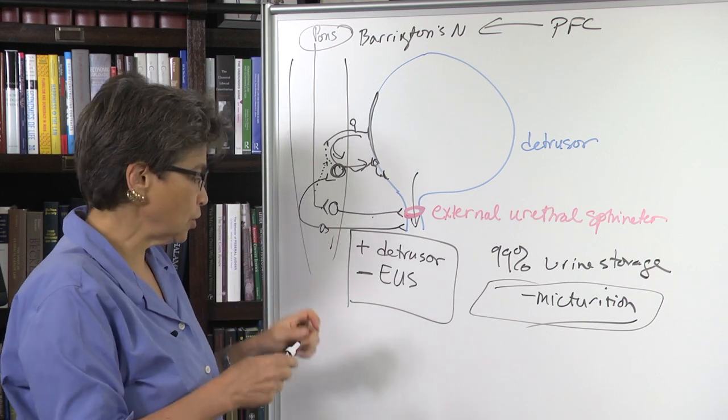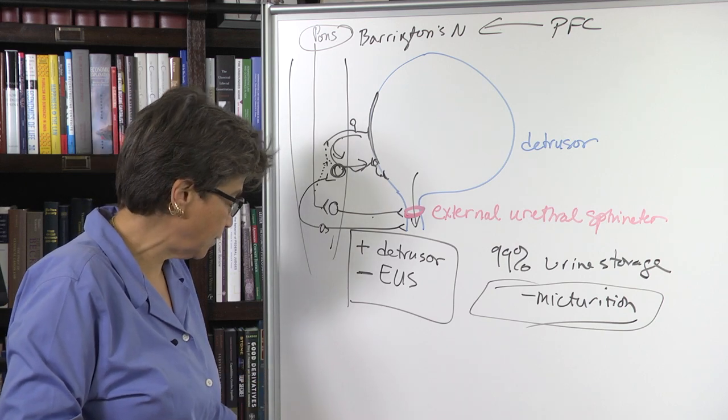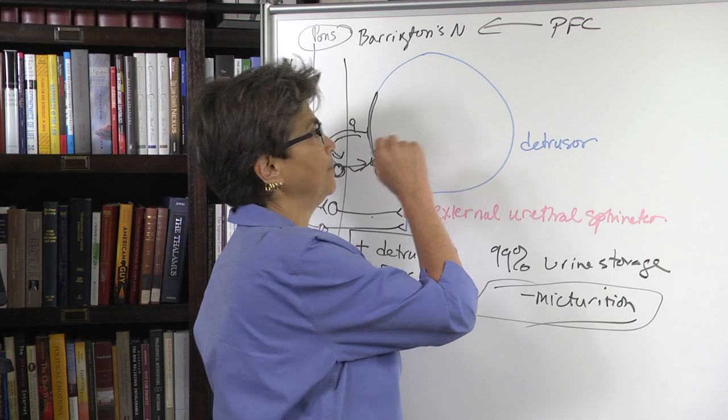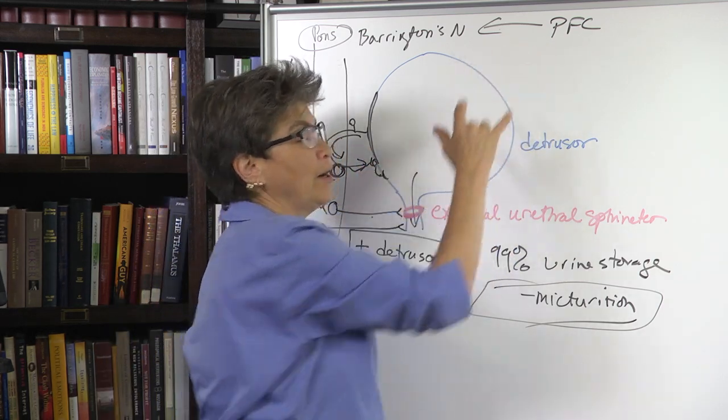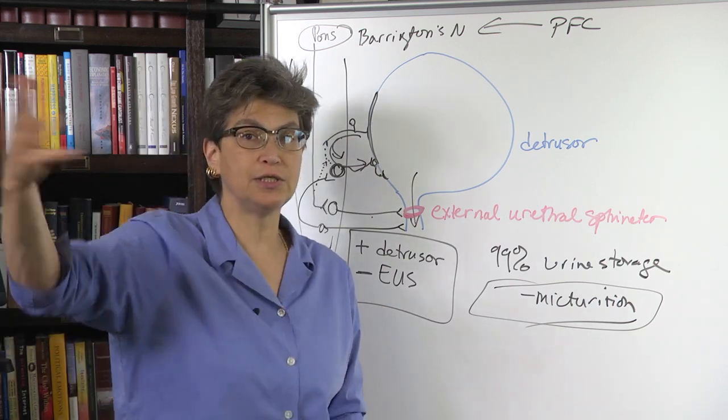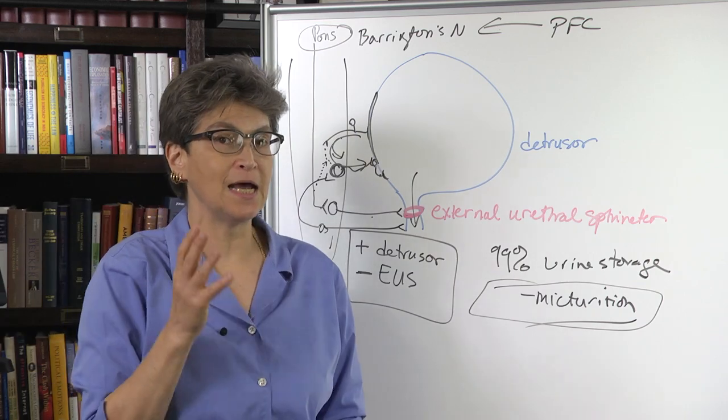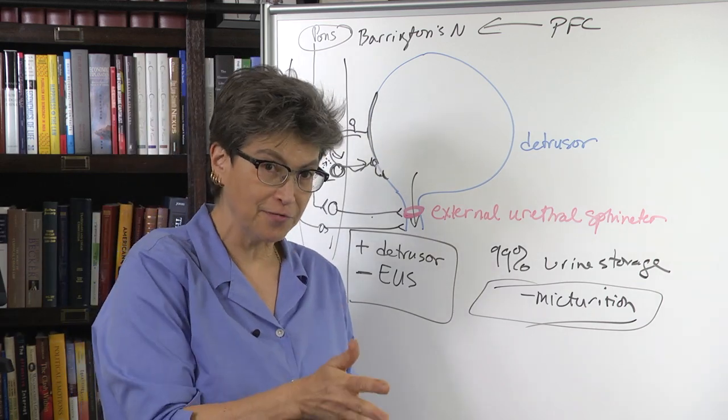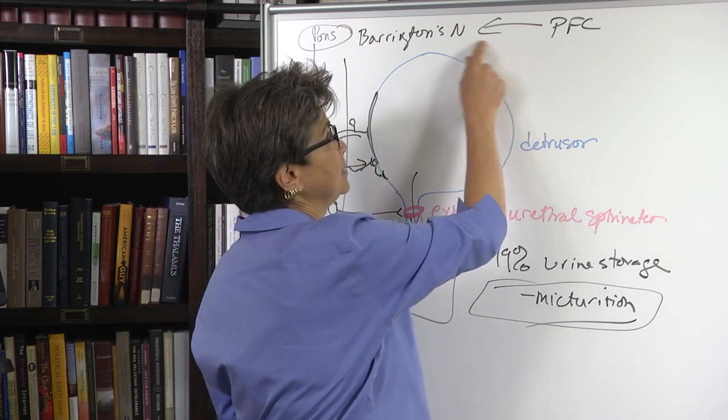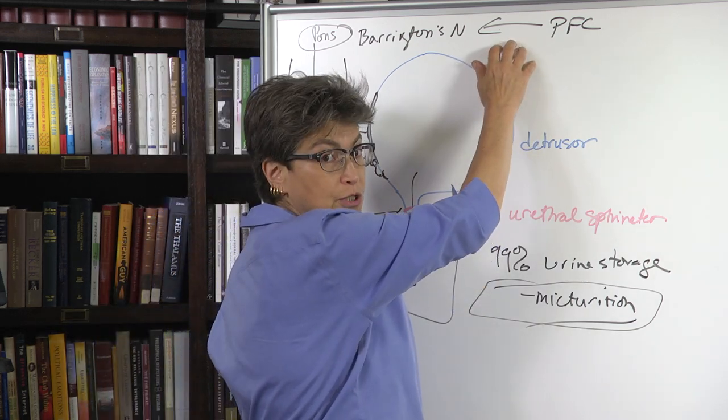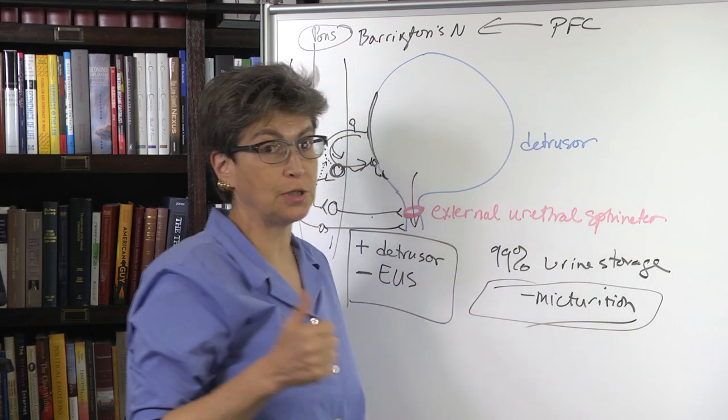A few points here before we go back to the slides. One is that the prefrontal cortex, this connection where you've decided, oh, this is a good time to go void urine, that's not developed out of the womb. Okay. So a neonate doesn't have that. A neonate develops this connection, learns to do this connection within the first few years of life. Okay. So that's number one.